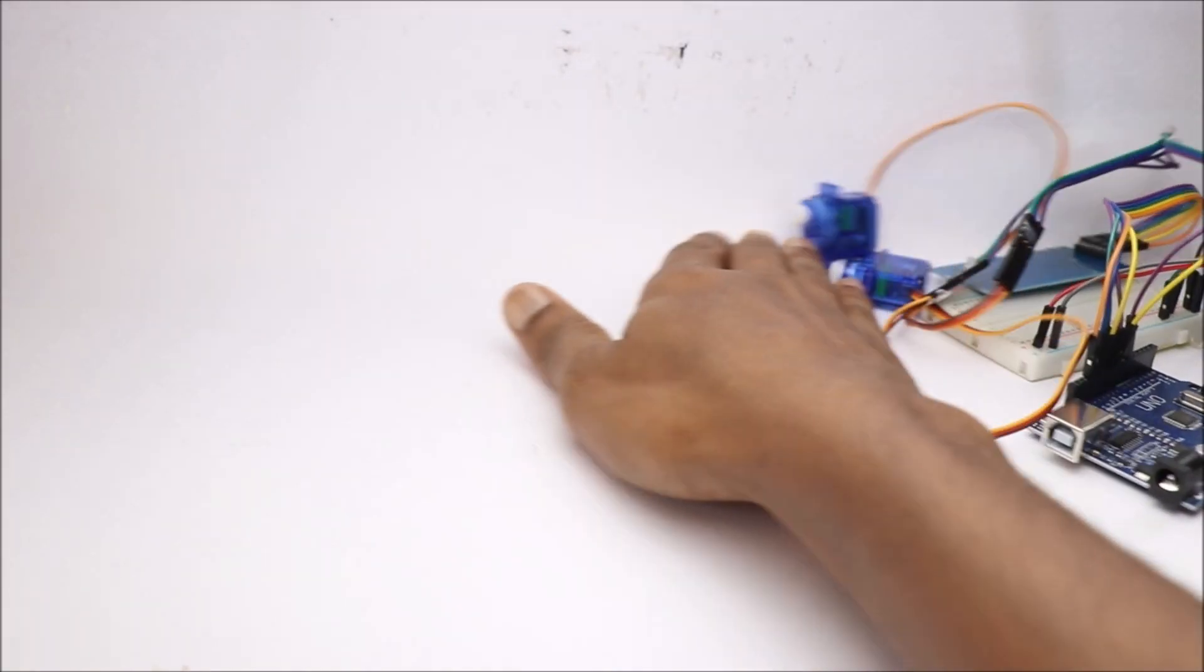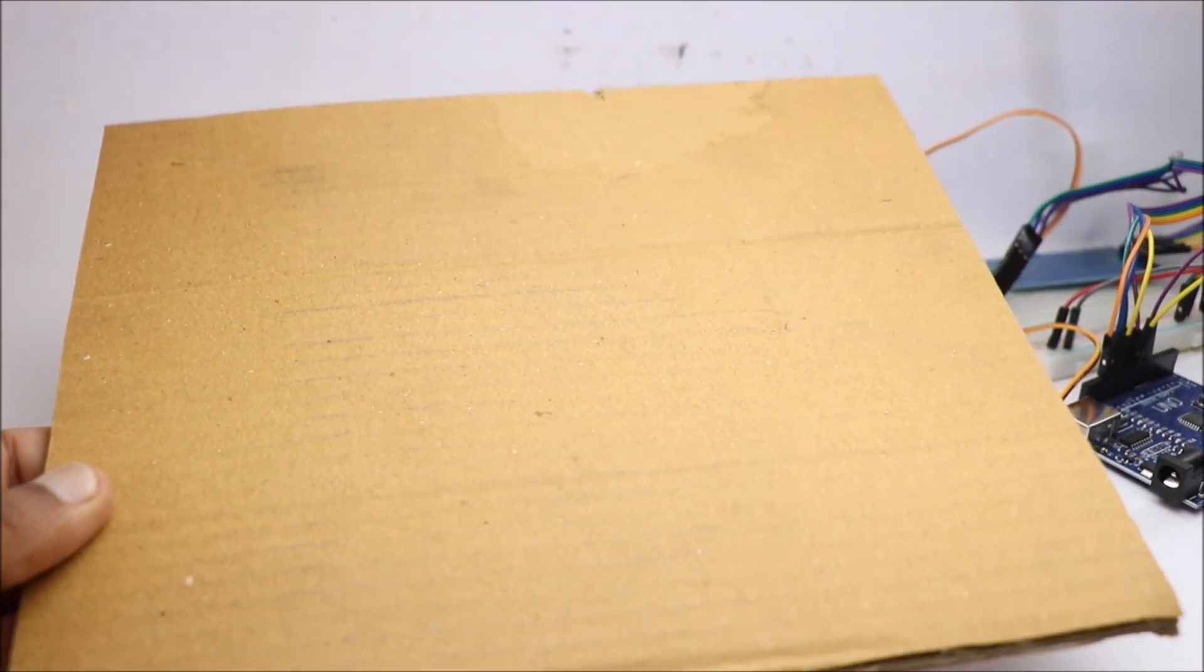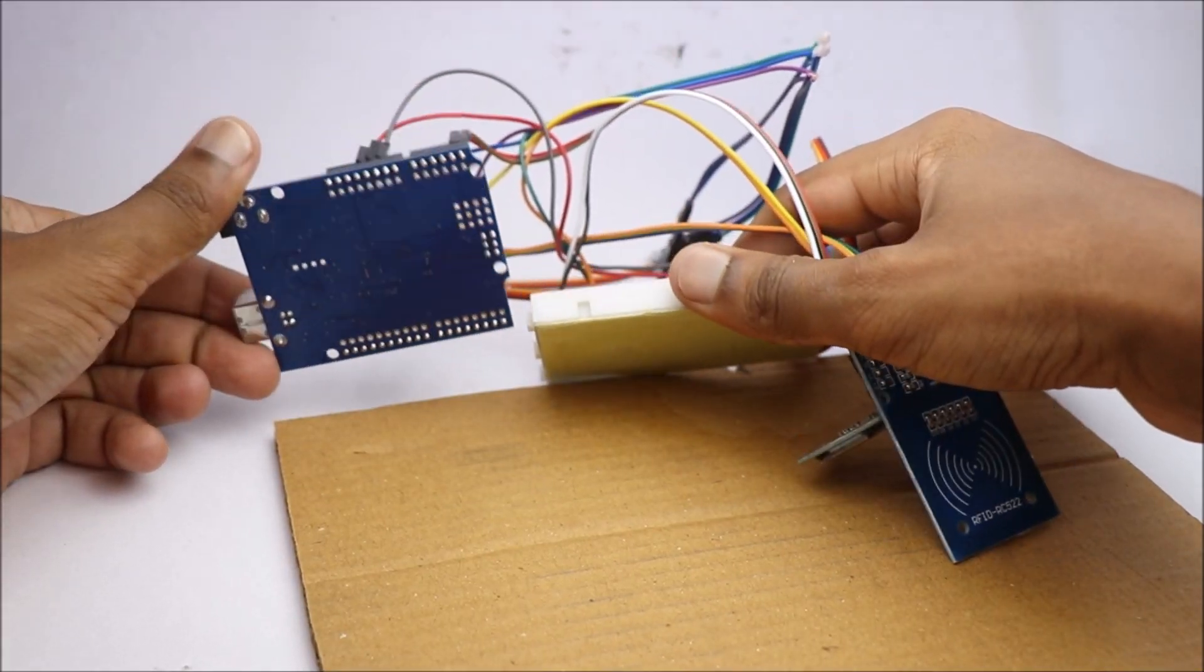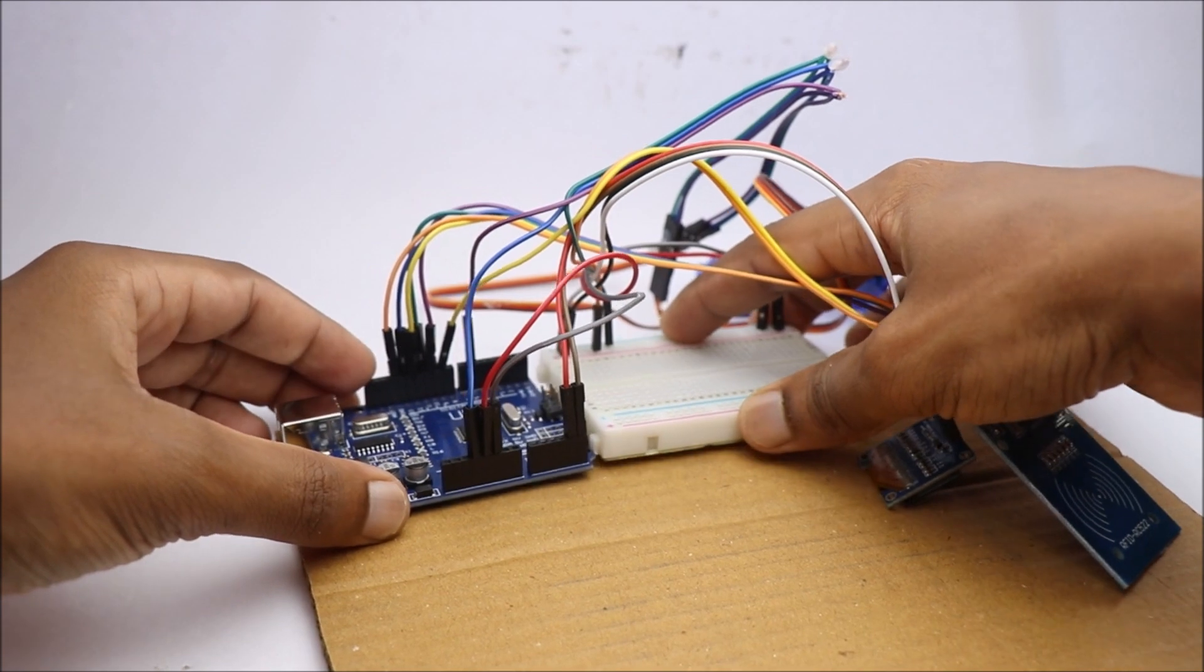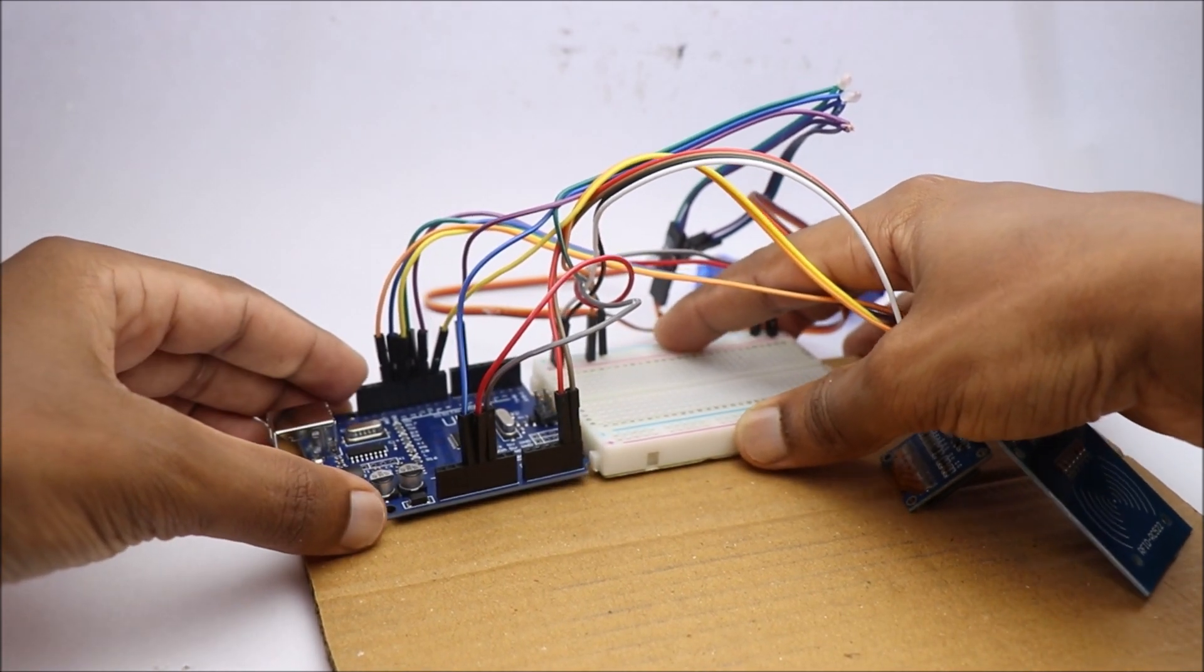To keep all the electronics in place, I will use this piece of cardboard. Use hot glue and pieces of board to keep all the electronic components intact.